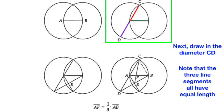Next, we can look at the second diagram and draw in the diameter of one of the circles, labeled as CD. Note that each of the 3 segments colored in red, purple and green has the same length, all being radius of the first circle.